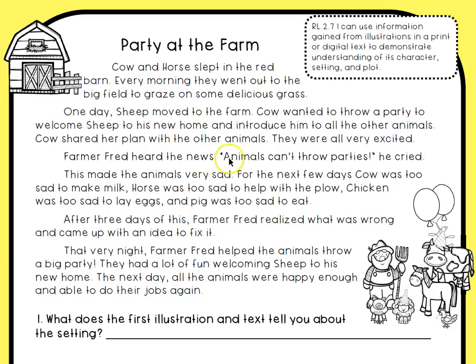Farmer Fred heard the news. Animals can't throw parties, he cried. This made the animals very sad. For the next few days, Cow was too sad to make milk, Horse was too sad to help with the plow, Chicken was too sad to lay eggs, and Pig was too sad to eat.